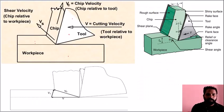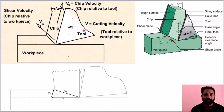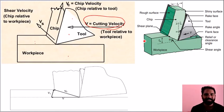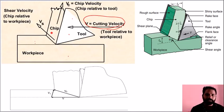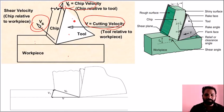Next are the three velocities. The first is cutting velocity: when we apply force to the tool and move it, the velocity of the tool with respect to the workpiece is the cutting velocity, and it is horizontal. Next is shear velocity: when we apply shear, the grain boundaries break through slip and shear. This relative velocity — the chip with respect to the workpiece — is the shear velocity.